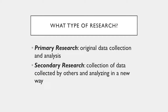Now you need to think about what type of research you will be doing. There are two types: primary research and secondary research. Primary research, which is what you will be doing for your capstone project, involves the plan and collection of original data for a specific purpose and then analyzing that data. Secondary research, which you've likely done many times in other classes, is the collection of data already gathered by other people for other purposes, which you then analyze in a new way. In the capstone, we want you to conduct a primary research proposal.